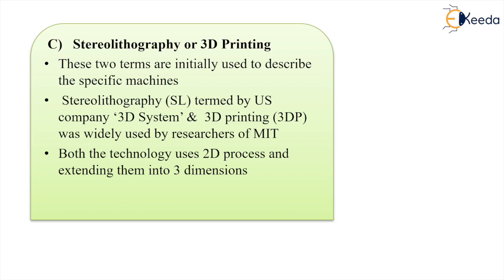The third term is Stereolithography or 3D Printing. These two terms are used to describe specific machines. The Stereolithography term was used by the US company 3D Systems, and 3D Printing (3DP) was widely used by researchers at MIT. Both technologies use 2D processes and extend them into three dimensions — basically we have 2D processing and we extend that 2D into 3D modeling.